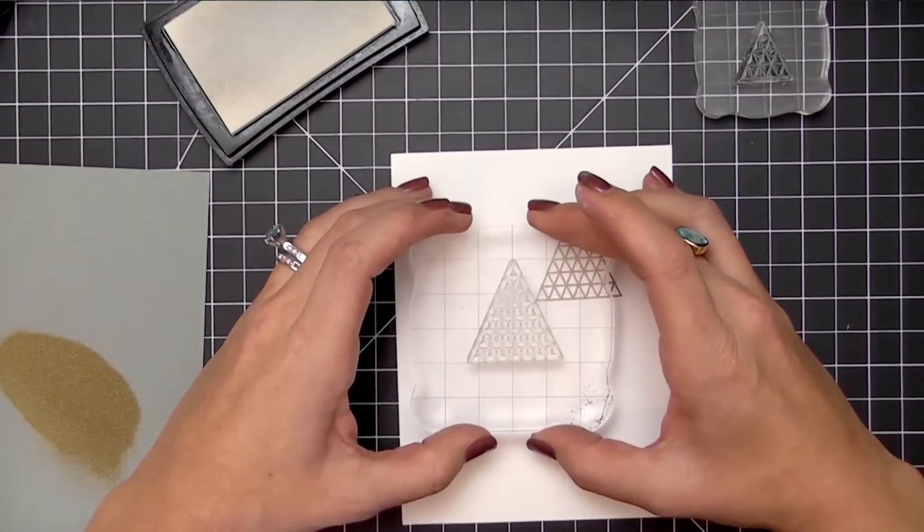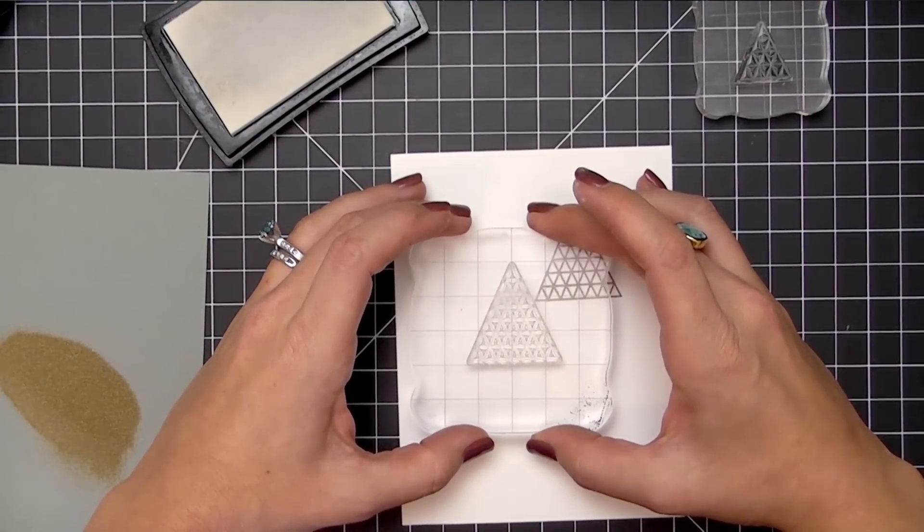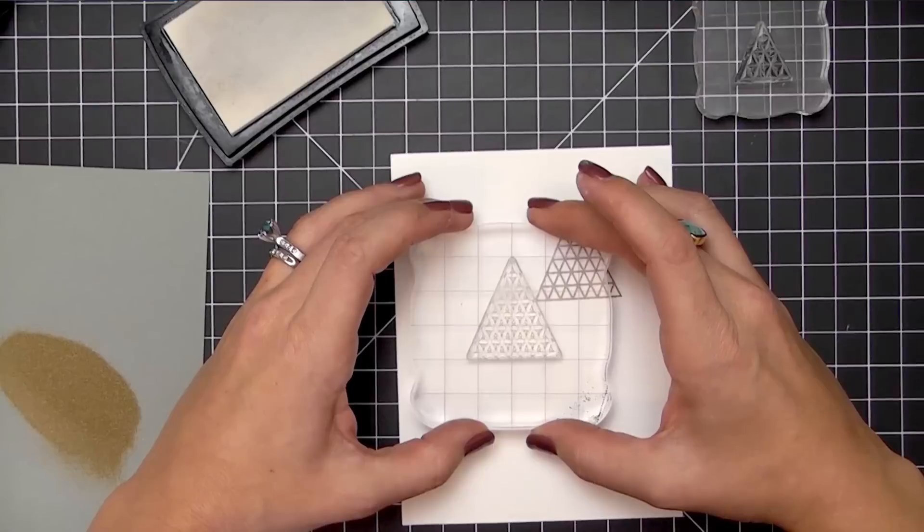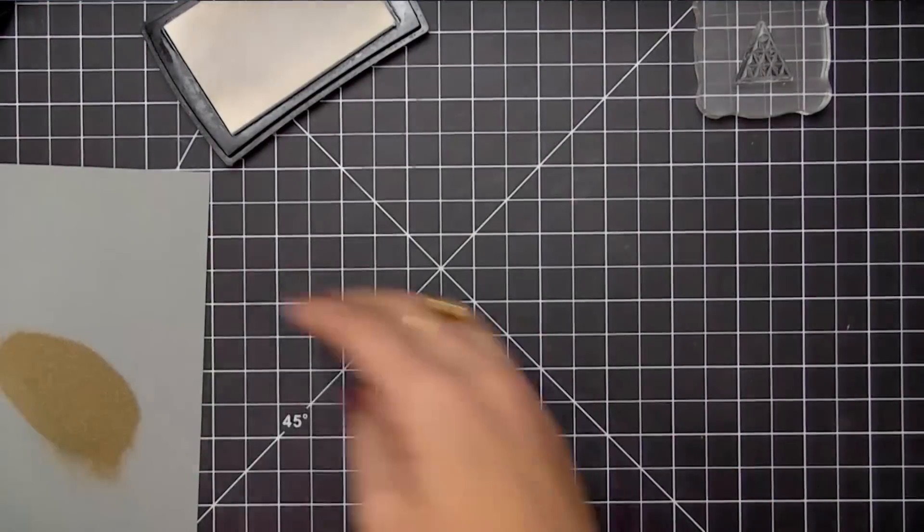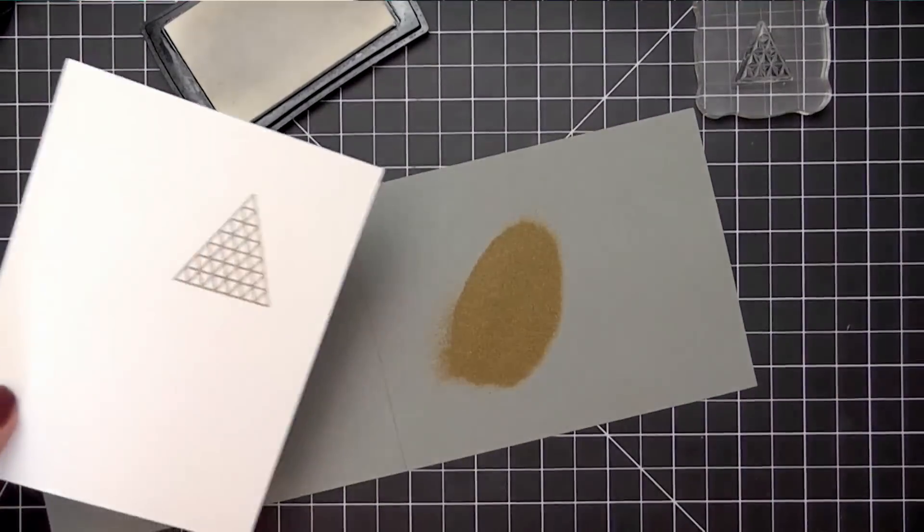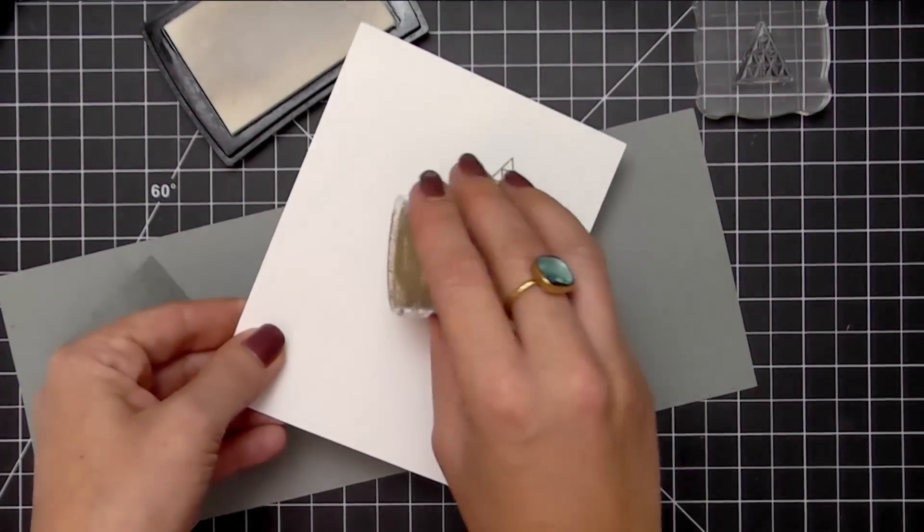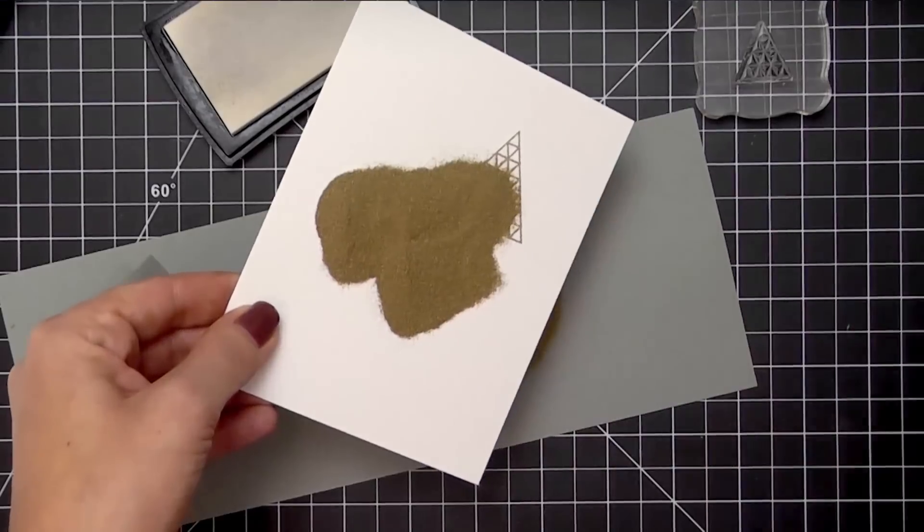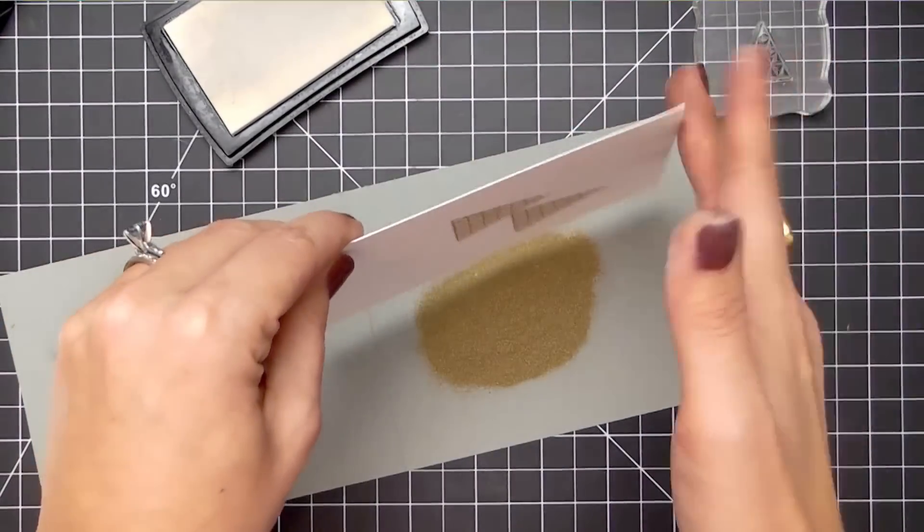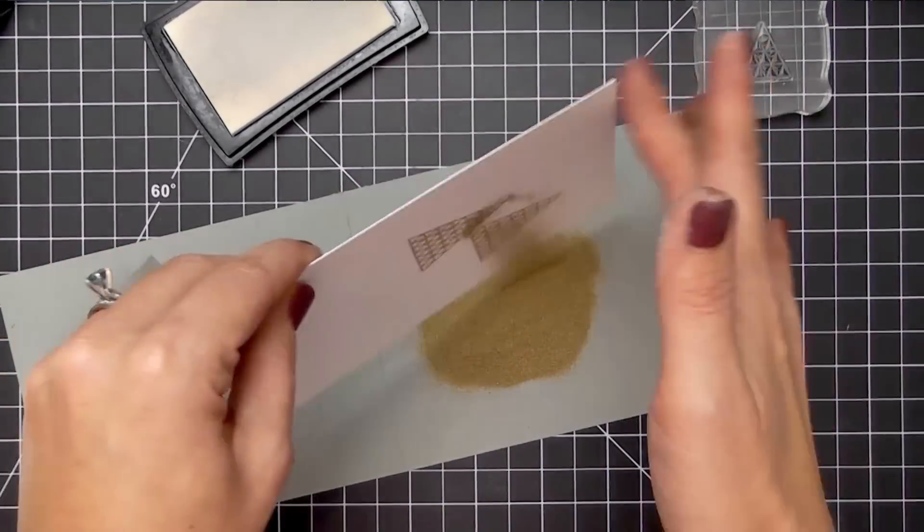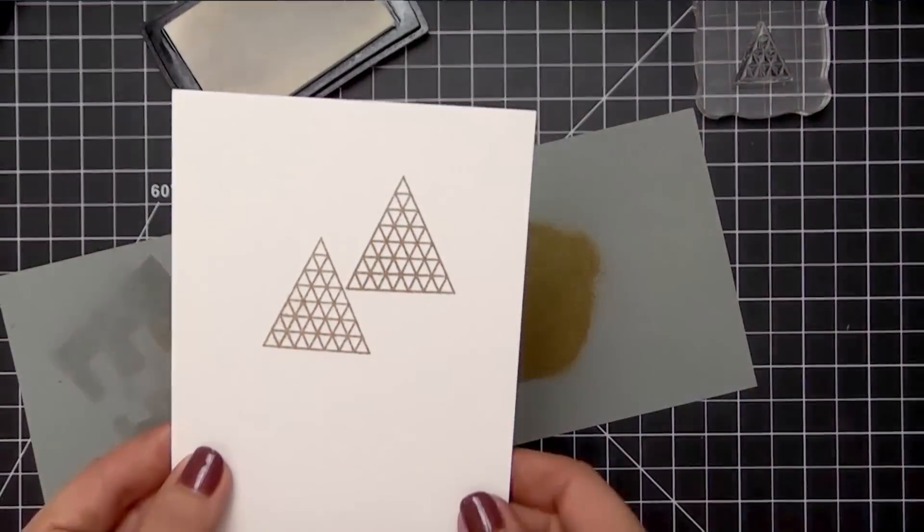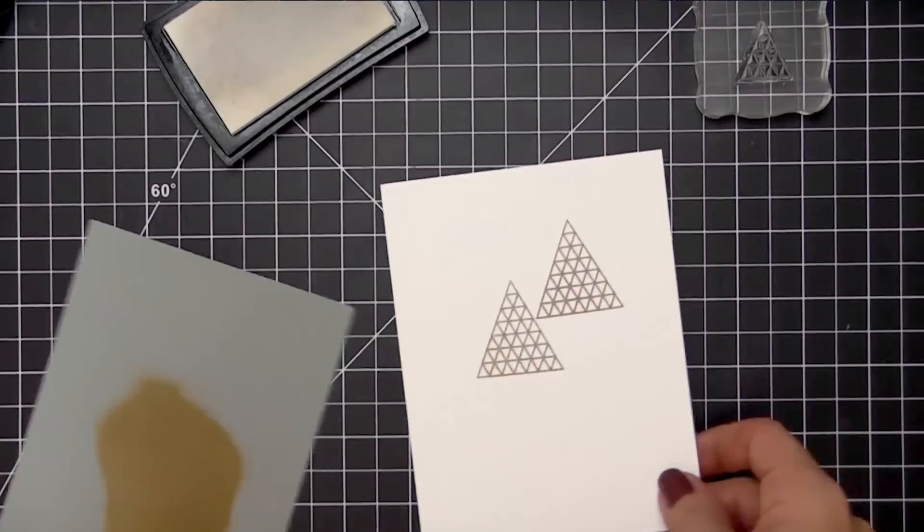I'm going to go ahead and stamp down another triangle here. The reason that I'm applying my powder and then stamping again is because I can't see where I've stamped previously because that Versamark is a clear sticky ink. So this way if I stamp and then sprinkle my powder on and then stamp again, I'll be able to see where I've previously stamped.